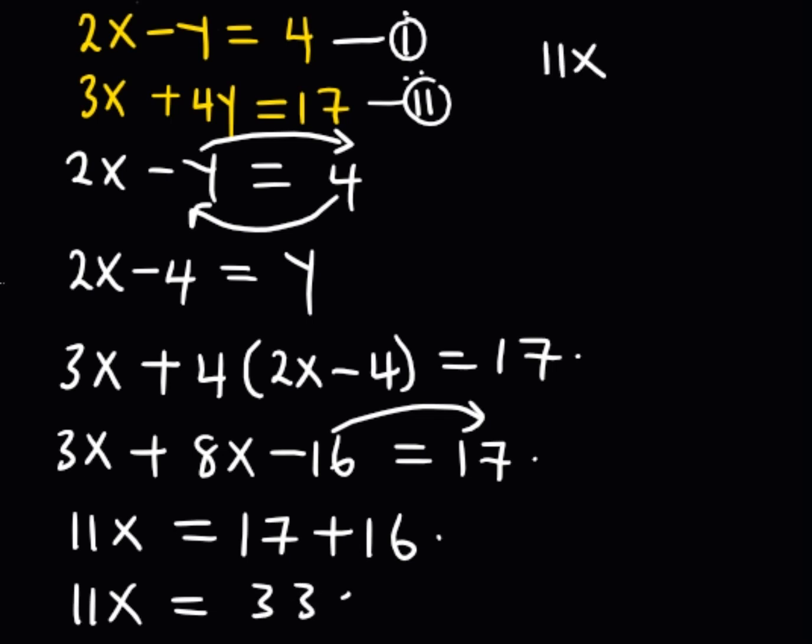So 11x is equal to 33, implying that 11x is equal to 33, we divide both sides by 11. So the value of x is equal to 3.